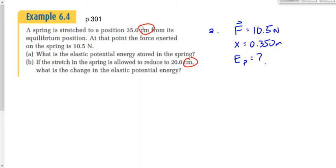You have two equations available: F equals kx, and Ep equals one-half kx squared. Just like back in unit 1 when we learned group A and group B equations, here you pick whichever equation fits the givens best. If one doesn't work, try the other, or combine them. Those are the only three possibilities in these questions.